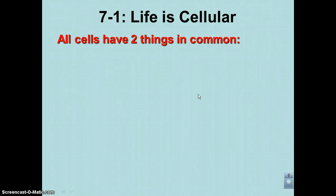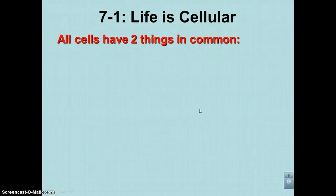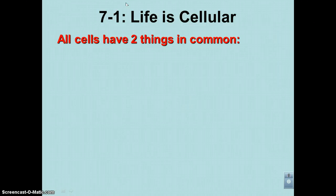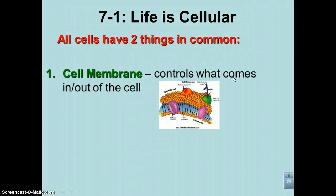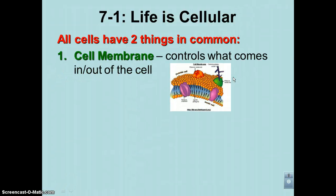This is podcast number three for chapter seven, dealing with cell structure and function. This one is going to cover the two types of cells, prokaryotic and eukaryotic, and all the things that cells have in common. First off, let's go with the things that cells have in common.